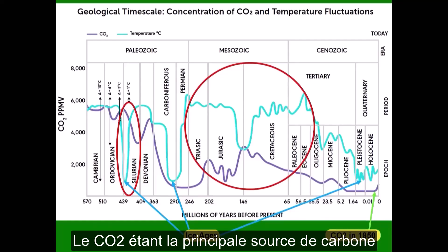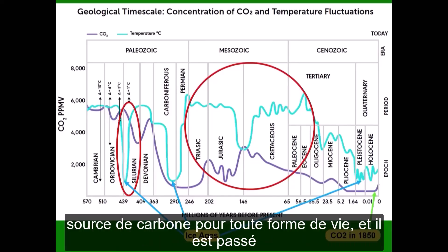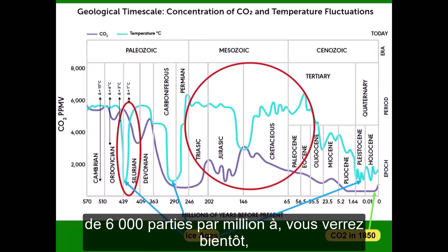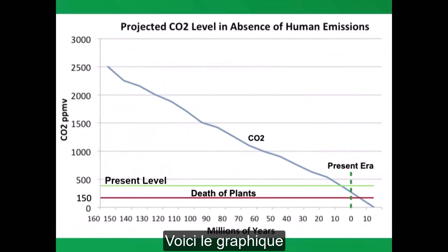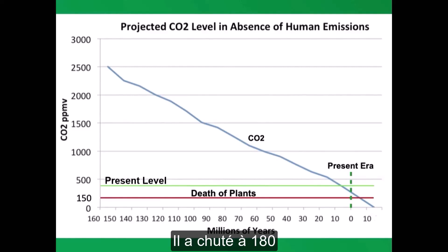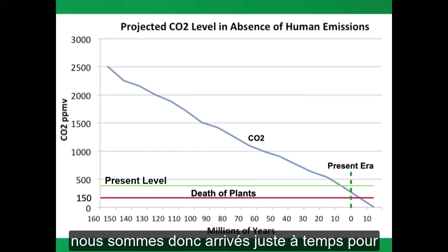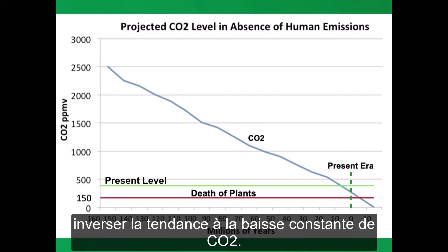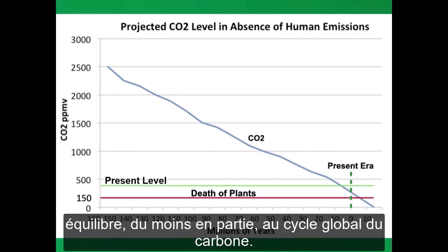CO2 being the main carbon source — in fact, the only carbon source — for all life. It went from 6,000 parts per million down to 180 in the last glacial maximum. And the death of plants occurs at 150 ppm. So we came along just in time to reverse the constant downward trend of CO2. In other words, we have restored a balance, somewhat, to the global carbon cycle. We are the salvation of life, not its destroyer.